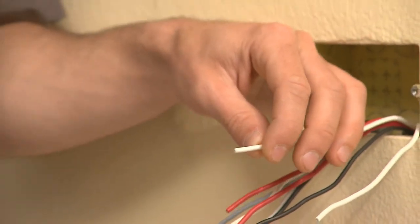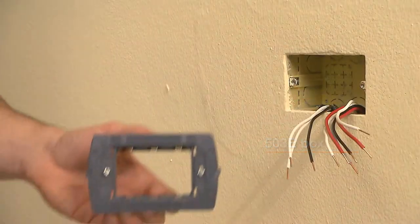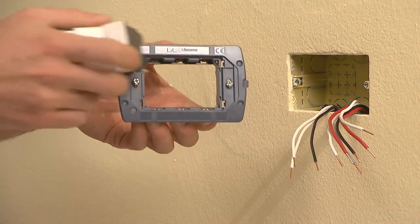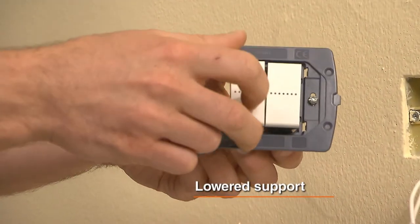Living Light Air is installed on traditional 503E boxes. In order to ensure minimum thickness of the light point, it needs a specific lowered support.